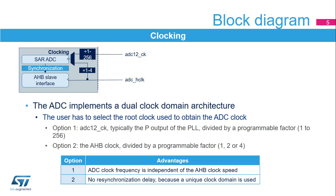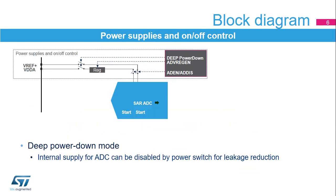An uncertainty of the trigger instant is also added by the resynchronizations between the two clock domains. The analog part of the ADC needs two power supplies: VREF+, which is the positive analog reference, and VDDA, which is the analog power supply. By default, the ADC is in deep power-down mode, where its supply is internally switched off to reduce the leakage currents.